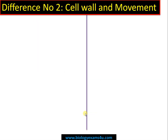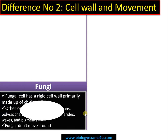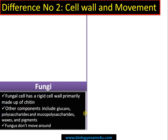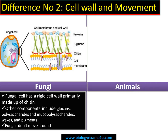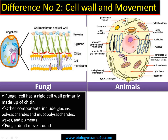Moving into difference number two, regarding cell wall and movement. Fungi have a rigid cell wall which is primarily made up of chitin. There are other components also that include glucans, glycolipids, polysaccharides, and even some pigments. Fungi don't move around because of the presence of the cell wall.